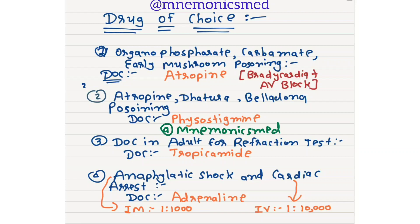Drug of choice in adults for the refraction test is tropicamide. Drug of choice for anaphylactic shock and cardiac arrest is adrenaline, but doses differ. For anaphylactic shock, IM route is most preferred at a ratio of 1 in 1,000. For cardiac arrest, it is most commonly given IV at a ratio of 1 in 10,000.